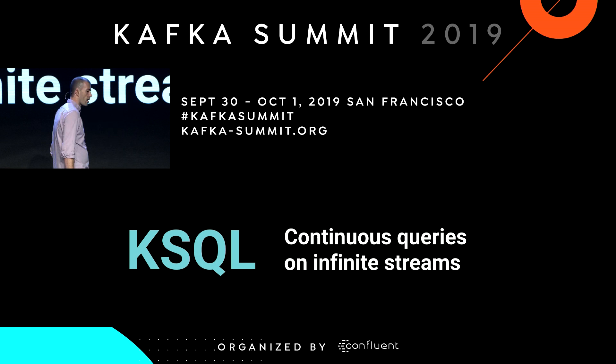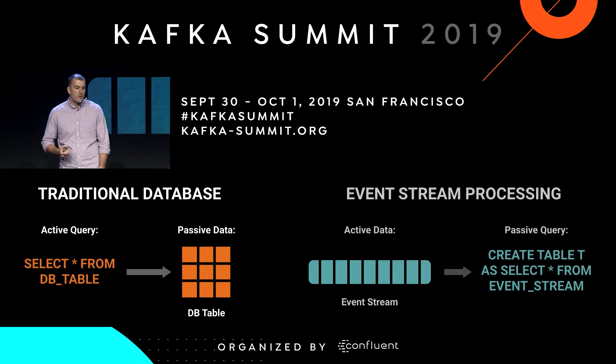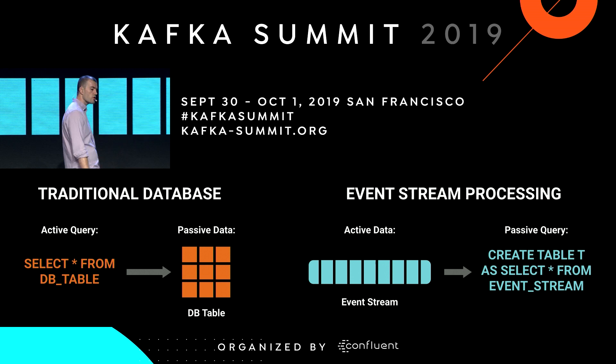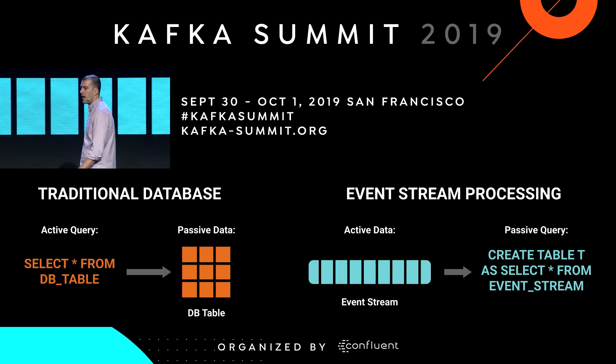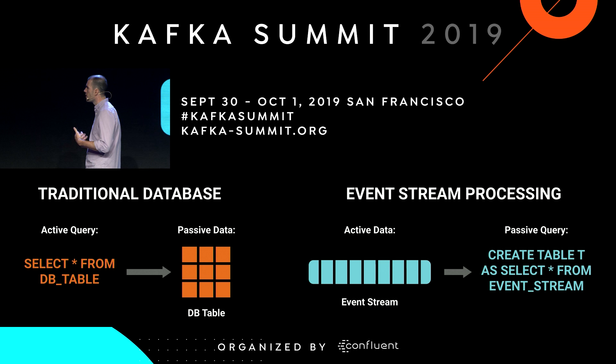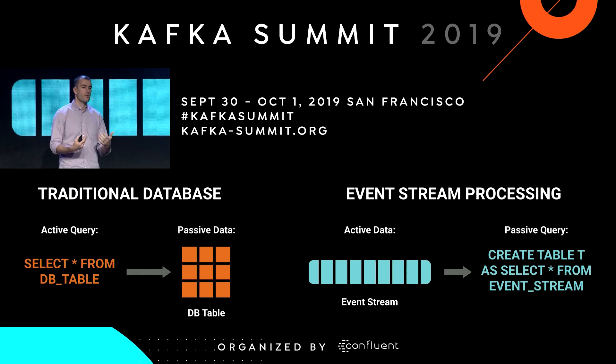KSQL is a SQL layer that lets you do continuous queries on infinite streams. To understand this, you need to understand the difference between a traditional database and event stream processing. In a traditional database, I have passive data sitting in a table, and an active query comes in, does a lookup, a select, an update, and then goes away. It scans through the data, computes the result, and gives it to the user. In event stream processing, it's almost the opposite — the query is now passive, it just sits there processing all the time. It doesn't do any work until the data comes to it. When new data arrives, more processing occurs. So now we have a passive query and active data.